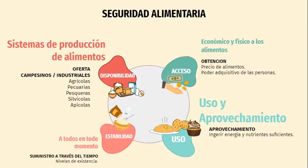El desperdicio de alimentos también es un problema que afecta a la seguridad alimentaria de los mexicanos y esto se refiere a los cuatro pilares de la seguridad alimentaria, en el cual nosotros vamos a englobar la oferta de los alimentos, que es el pilar de sistemas de producción de alimentos. Otro pilar de la seguridad alimentaria es el acceso, el uso y la disponibilidad. Nosotros tenemos identificado el problema en el sistema de producción de alimentos, que es donde se desperdician y se pierden la mayor cantidad de alimentos en toda la cadena de producción, y en el uso y el aprovechamiento de los alimentos en el hogar.